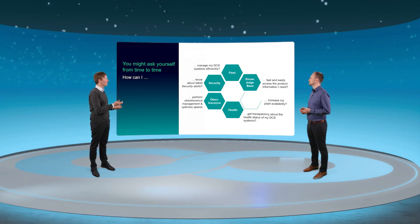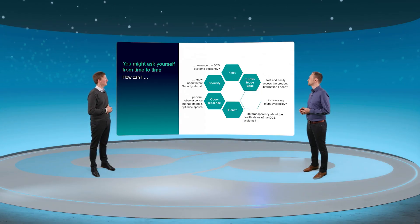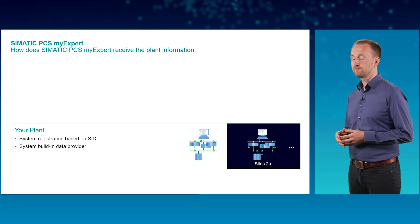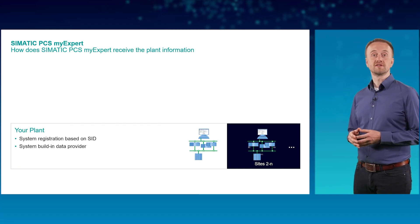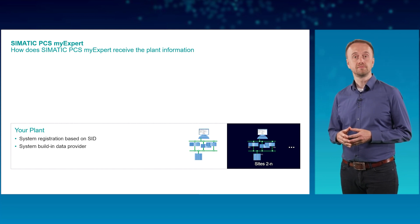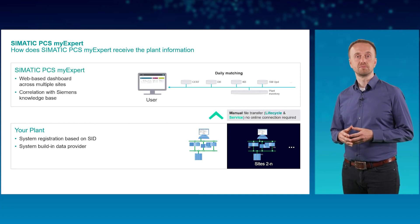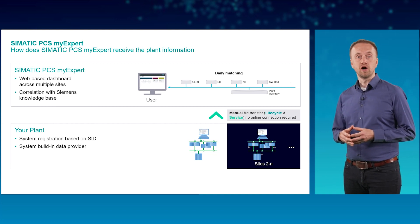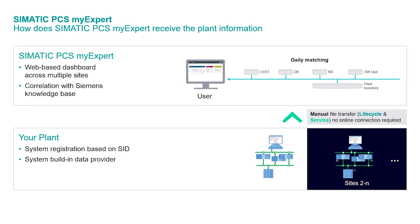What do I need to get started with SIMATIC PCS My Expert? It takes only a few simple steps. All you need is a system built-in data provider and your plant-specific system identification number. You create your plant inventory with the SIMATIC management console and upload it to SIMATIC PCS My Expert — this can be done in just a few minutes. Your inventory data is stored in a private area, and you have full control to grant or deny access to your colleagues or trusted partners.